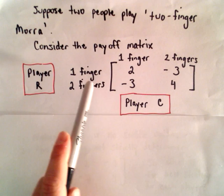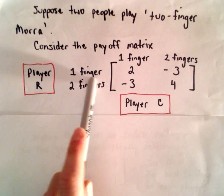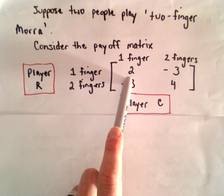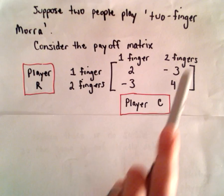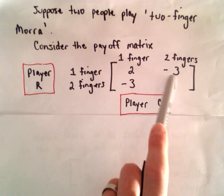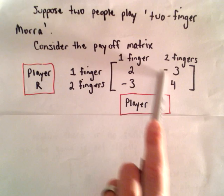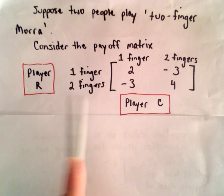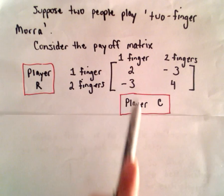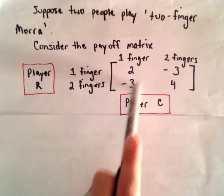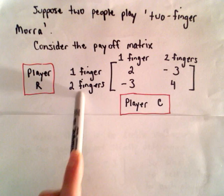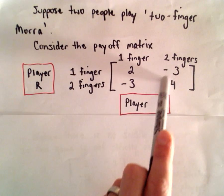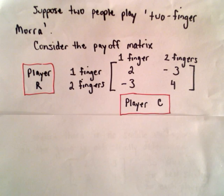So again, the idea is suppose if both players each show one finger, then player R gets $2. If player R shows one finger and player C shows two fingers, then player R has to pay $3. Likewise, if player R shows two fingers, player C shows one finger, again, player R has to pay $3. And if they both show two fingers, then player R wins $4.